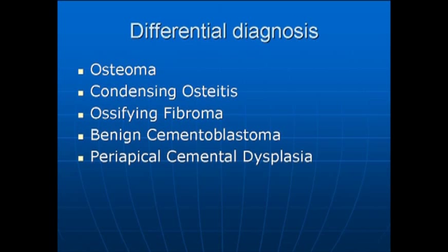The next one is benign cementoblastoma, where it's more of a tumor-like growth in the cementum. And then there's periapical cemental dysplasia, which usually occurs in middle-aged Black females, where it starts as a radiolucency and then turns to become radiopaque.